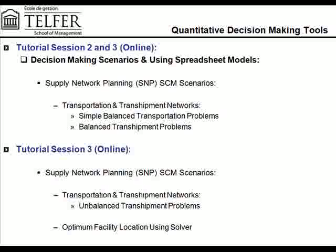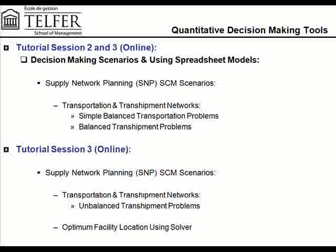The second scenario we talked about was a balanced transshipment problem where we introduced a couple of transshipment nodes between the source and demand nodes. But even in this case, there was a balance between the supply and demand, and those transshipment nodes did not really have any demand of their own. So in this tutorial session, we are taking that example a little forward and talking about unbalanced transshipment problems, which is the last and final type of problem in transportation and transshipment. You are going to use this example to solve for your last question in your assignment.